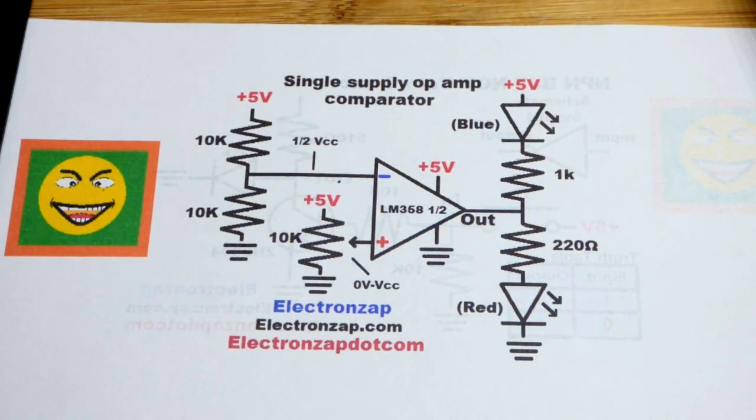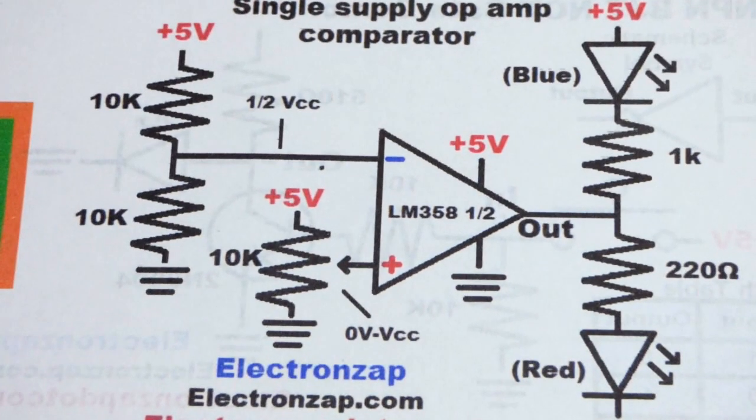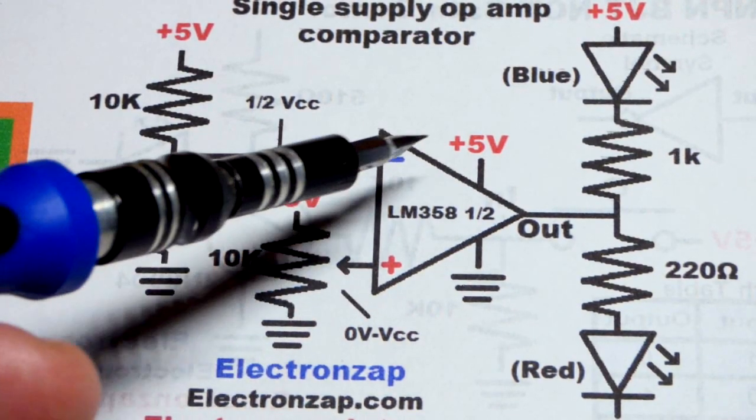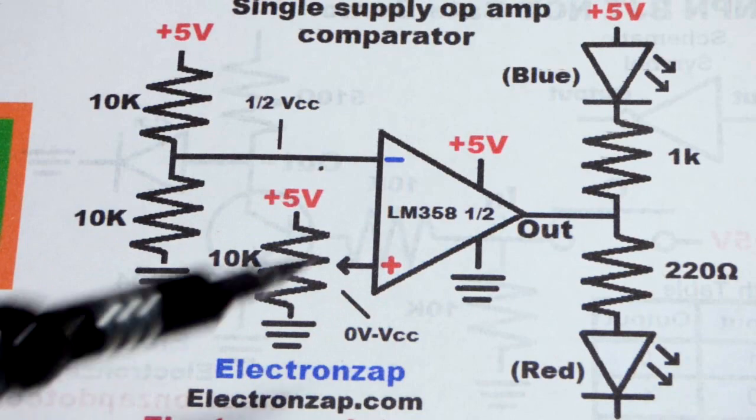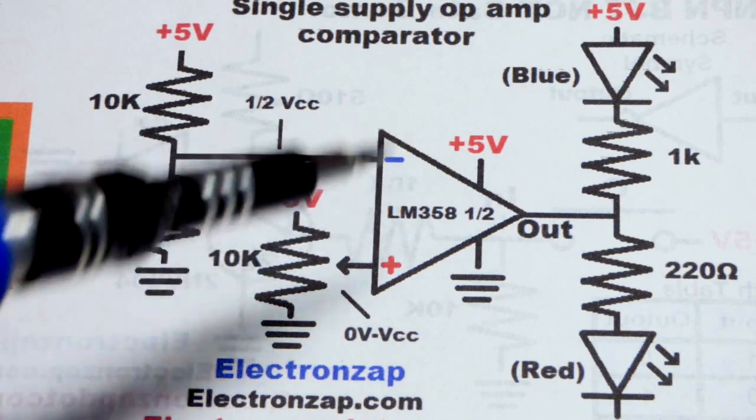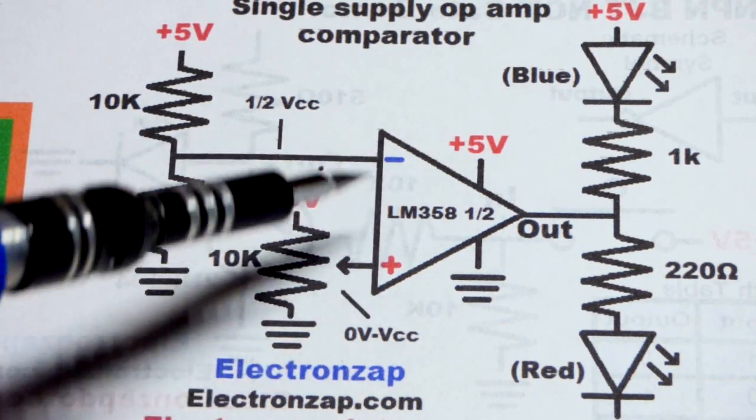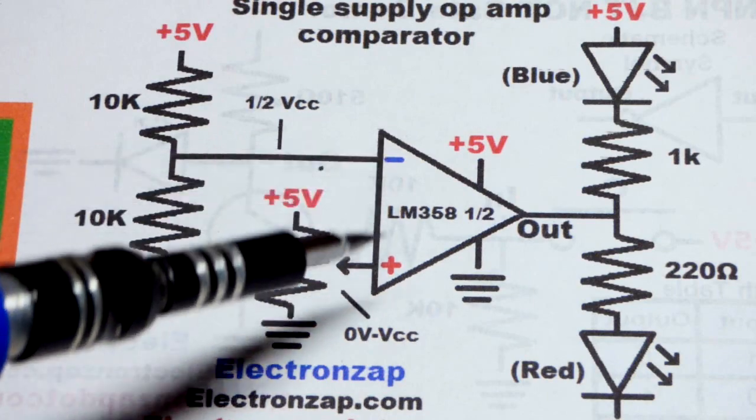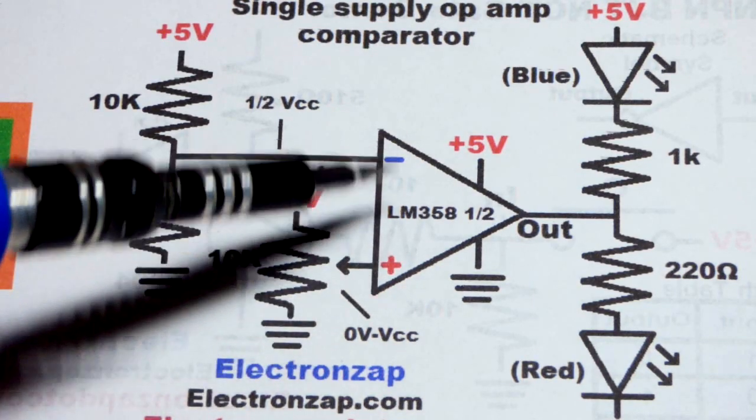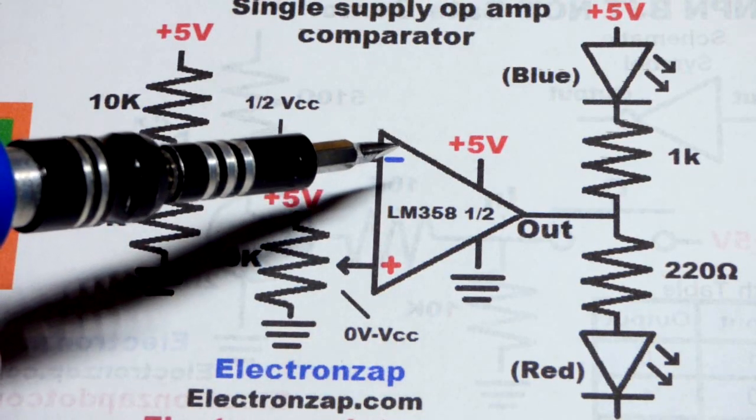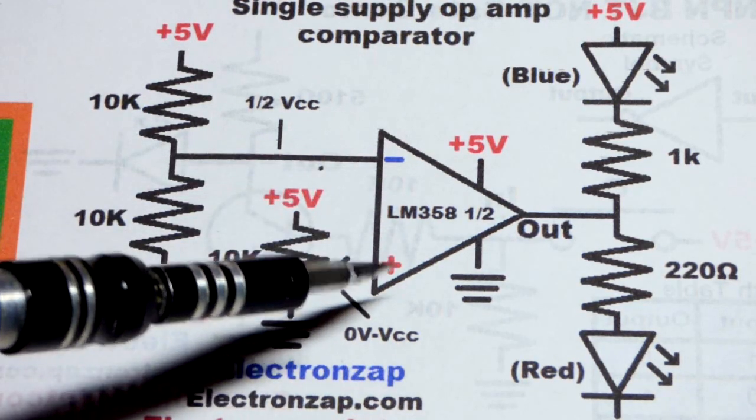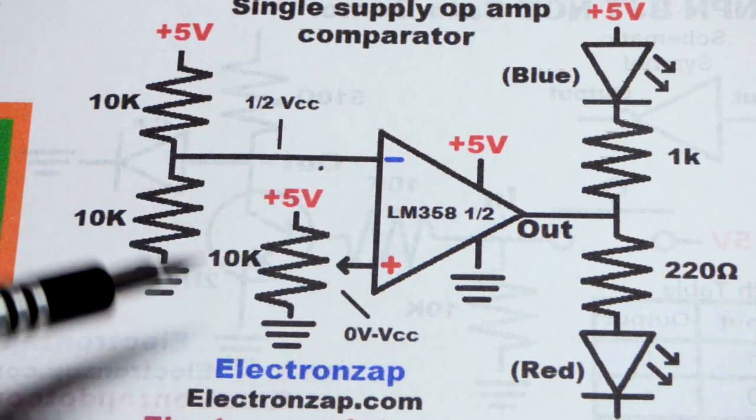What this does is it compares two voltages coming in. We have the inverting input and the non-inverting input, and sometimes you may just hear minus or plus, but technically it's inverting and non-inverting. Now, the schematic symbol may have the non-inverting up there instead and the inverting down there instead, so you've got to pay close attention to that.